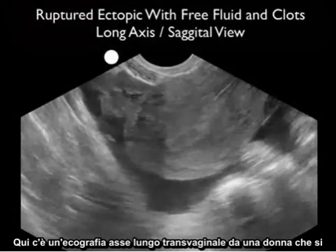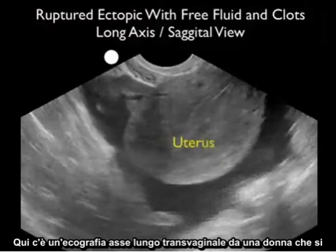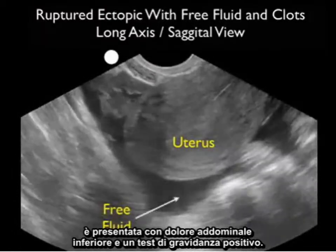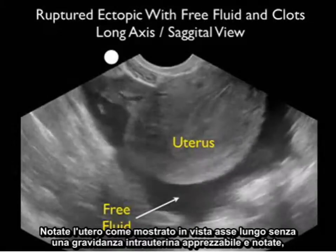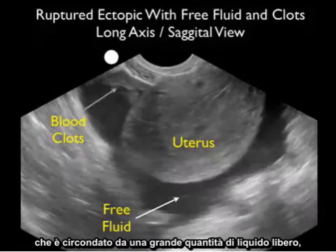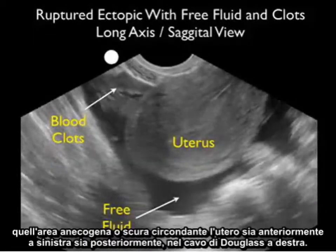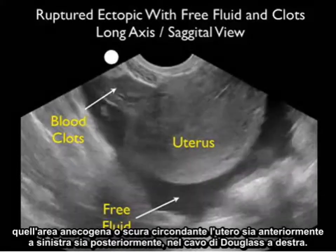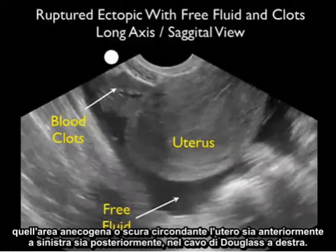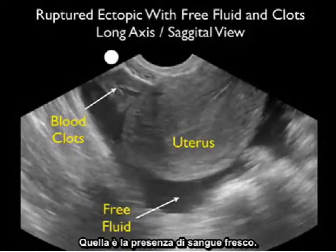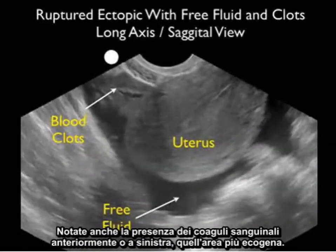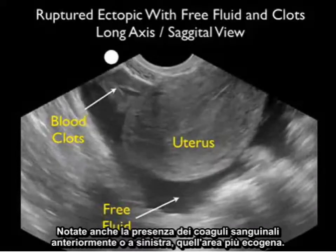Here's a transvaginal long axis ultrasound from a woman who presented with lower abdominal pain and a positive pregnancy test. Notice the uterus in long axis view without an appreciable intrauterine pregnancy, surrounded by a large amount of free fluid — that dark or anechoic area surrounding the uterus both anteriorly to the left and posteriorly in the cul-de-sac to the right. That is the presence of fresh blood. Notice also the presence of blood clots anteriorly, that more echogenic area.